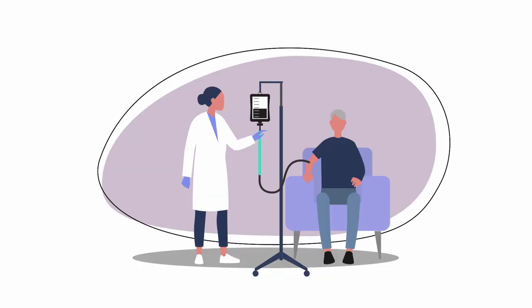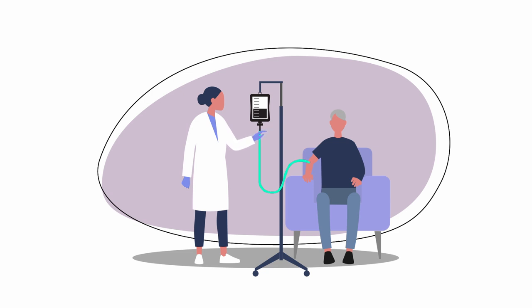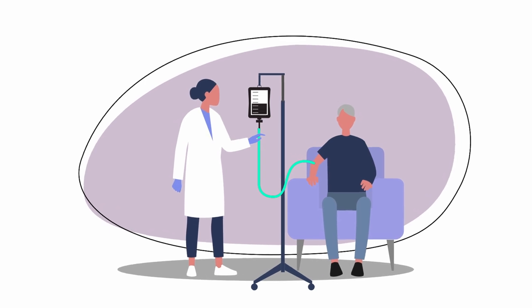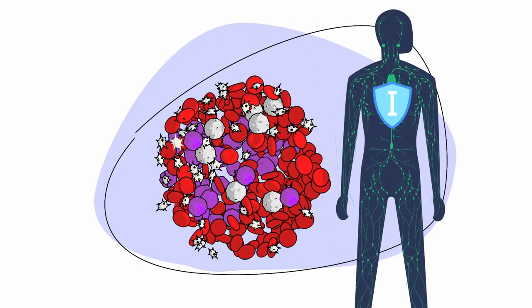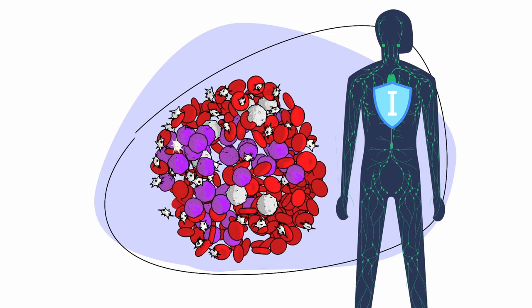Chemotherapy uses powerful drugs to destroy fast-growing cancer cells. These drugs can also damage other fast-growing cells that are normal. Immunotherapy uses your own immune system to fight cancer.